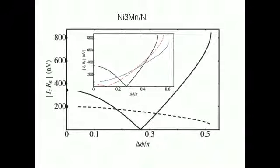A second system, nickel-3-manganese-nickel, is much softer than the previous cobalt-permalloy, which introduces a sizable singlet current across the system, again shown as a dashed line.